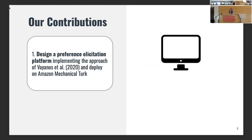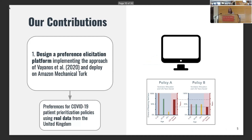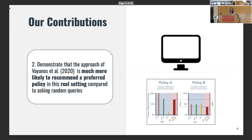I stress that this algorithm was developed in previous work. This work is about bringing the algorithm to real people like Amazon Mechanical Turk and designing an experimental procedure to actually evaluate whether it works. Our contributions: we design a preference solicitation platform and deploy it on Amazon Mechanical Turk implementing the robust active preference solicitation procedure, specifically asking workers about their preferences for COVID-19 patient prioritization policies. And at the risk of spoiling the punchline, we do show that the method is more likely to recommend a policy that more aligns with individual preferences compared to just asking randomly.